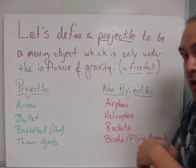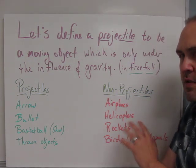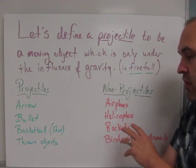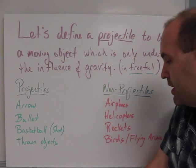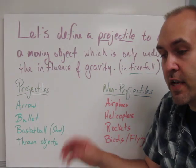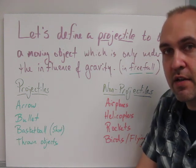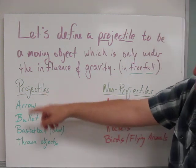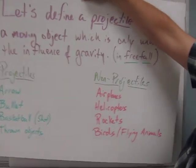Non-projectiles include things that are powered. So airplanes, helicopters, rockets, these are not projectiles because there's another force acting on those objects. Birds or flying insects or bats. There's another force acting on those objects other than gravity. Either the wings are pushing the air or there's a rocket engine or a rotor blade. So we'll be dealing with lots of things that are thrown, projected into the air.